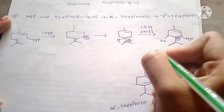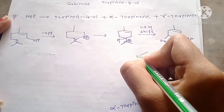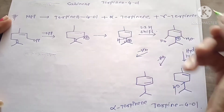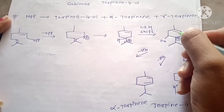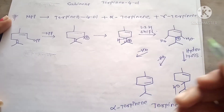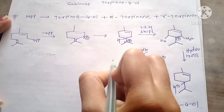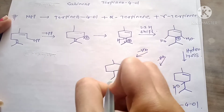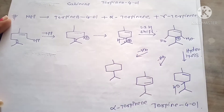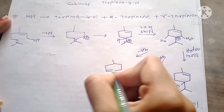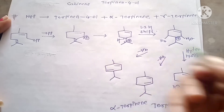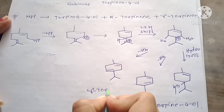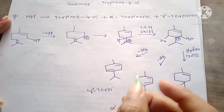Next, the loss of HB proton and we will get the structure of gamma terpinene — here double bond, here double bond. This is the structure of gamma terpinene.